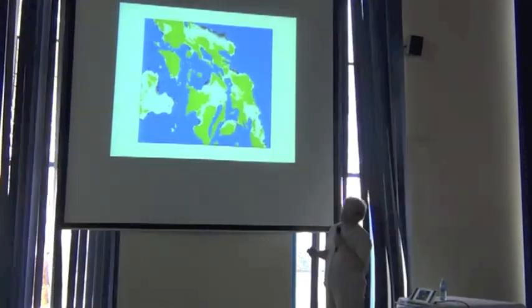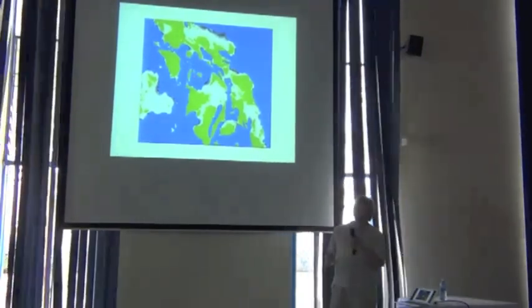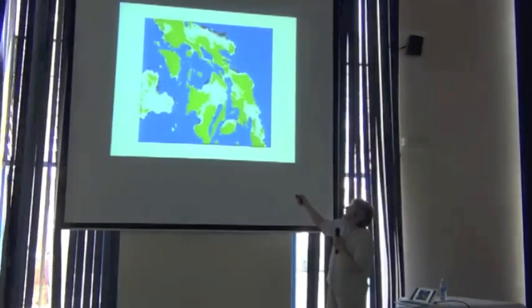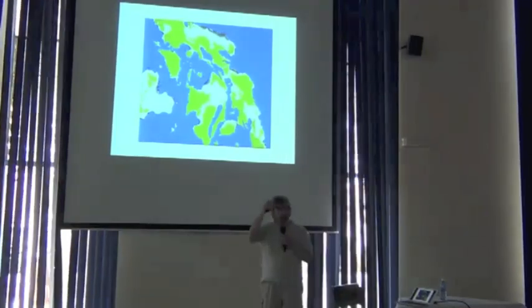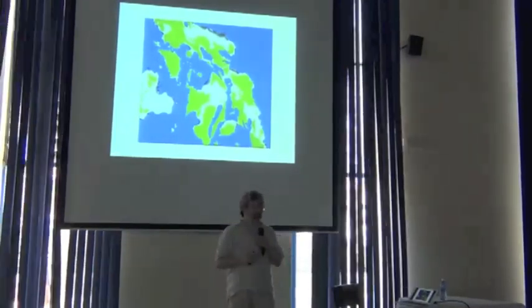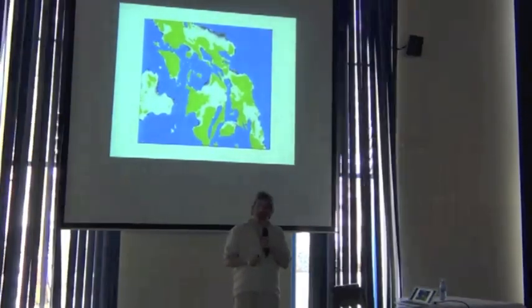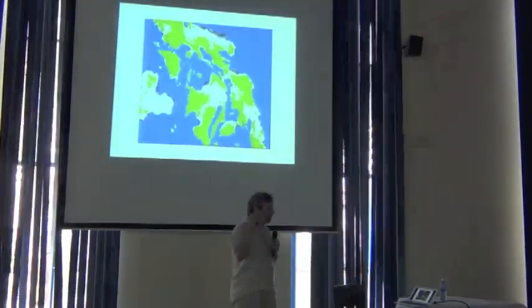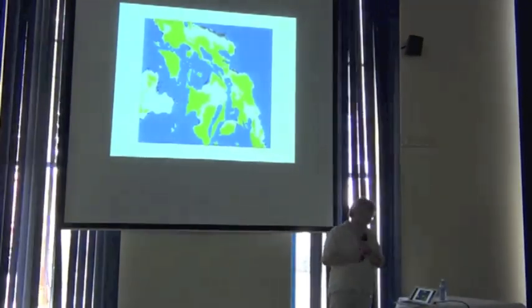So, just to give you an example of what that means, this is the Sunda Shelf. The green areas are current day islands. The gray areas are areas that would have been exposed at those globally cool periods that had those low sea levels. So, the world was very, very different just not too many years ago.